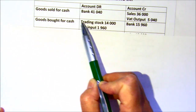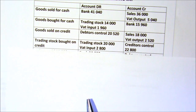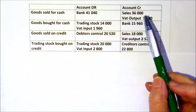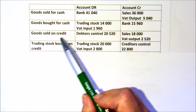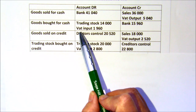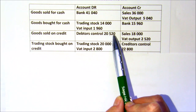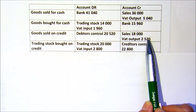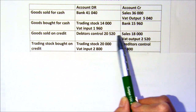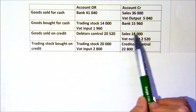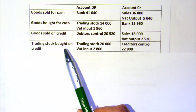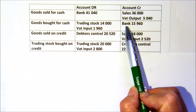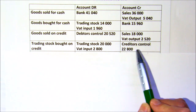If we bought or sold on credit, it's the same concept but we're not receiving money immediately. If we sell on credit, we debit debtors with the full amount — that's what the debtor owes me. Of that 2,520, some is owing to SARS as VAT output, and the actual sales amount you're making a profit on is 18,000. If we're buying goods on credit, the only difference is that instead of cash going out, we now owe our creditor the full amount.